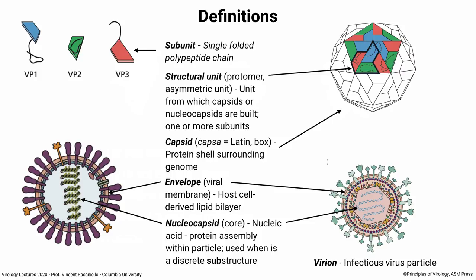Next, we have a 'structural unit,' which I will often call a protomer or an asymmetric unit. This is the basic unit we use to build up capsids. Here on the right is a capsid — a virus particle — made of subunits. You can see the red subunit VP3 is part of the capsid, but it's also part of a structural unit made up of three proteins: VP1, 2, and 3 — blue, red, and green.